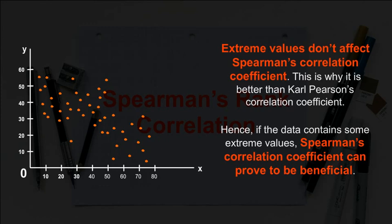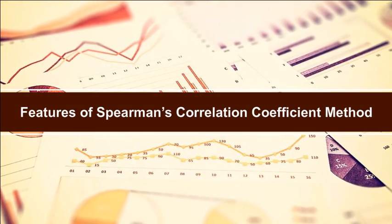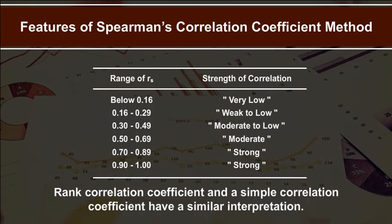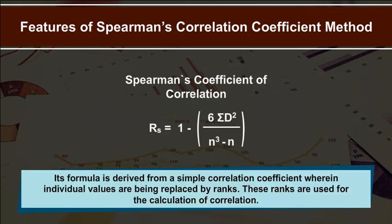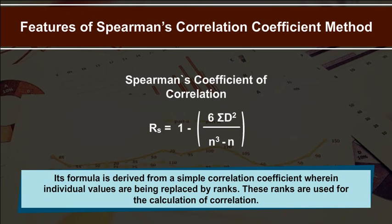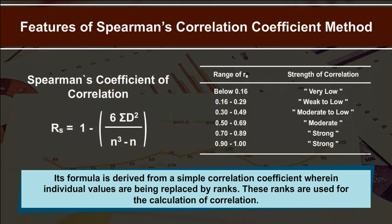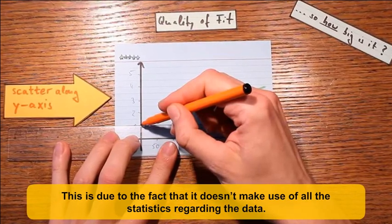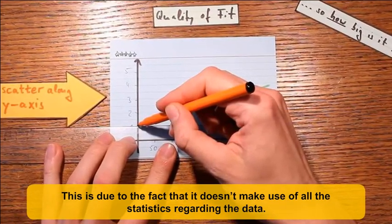If the data contains extreme values, Spearman's correlation coefficient can prove to be beneficial. The rank correlation coefficient and simple correlation coefficient have a similar interpretation. Its formula is derived from the simple correlation coefficient, where individual values are replaced by ranks. Like Pearson's coefficient, it lies between 1 and -1, though it is generally not as precise because it does not make use of all the statistics regarding the data.